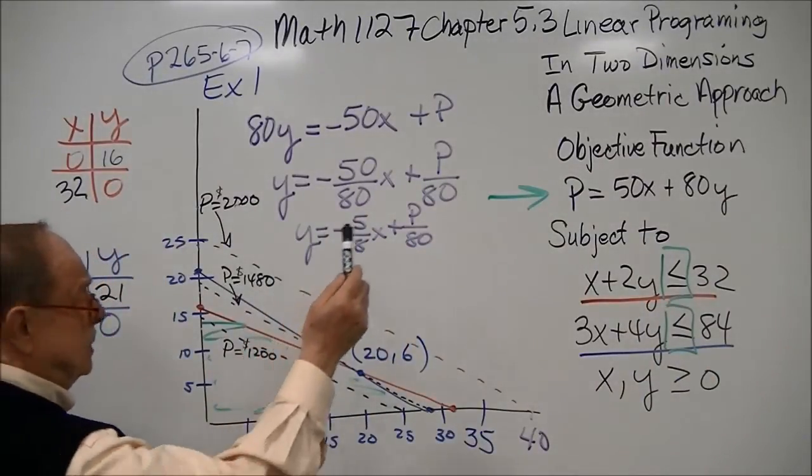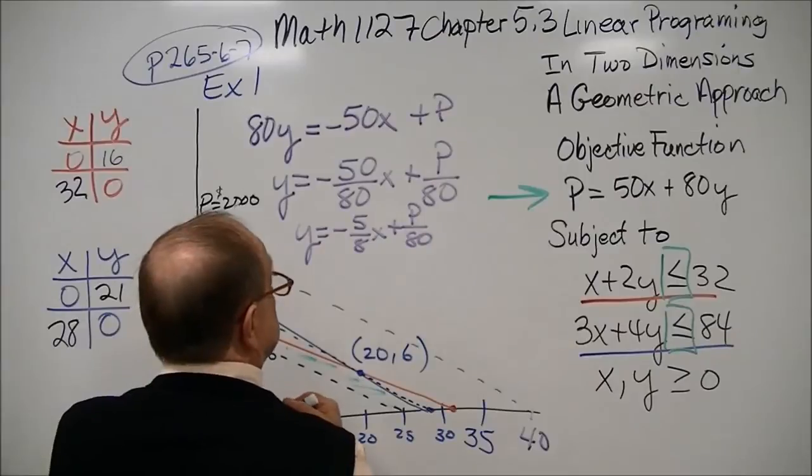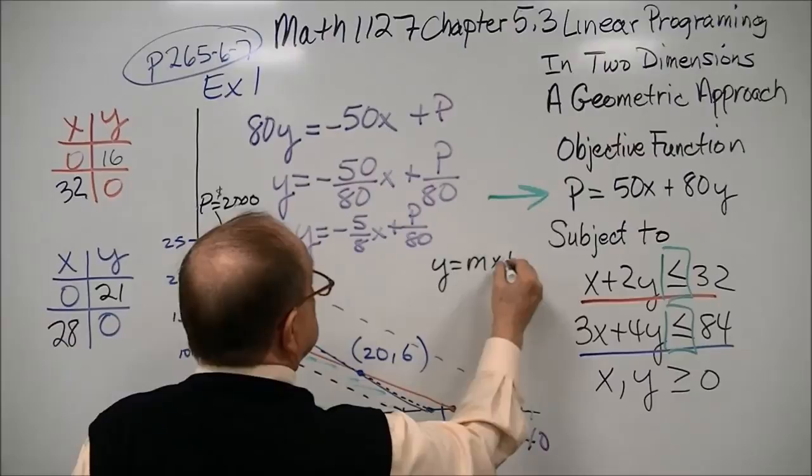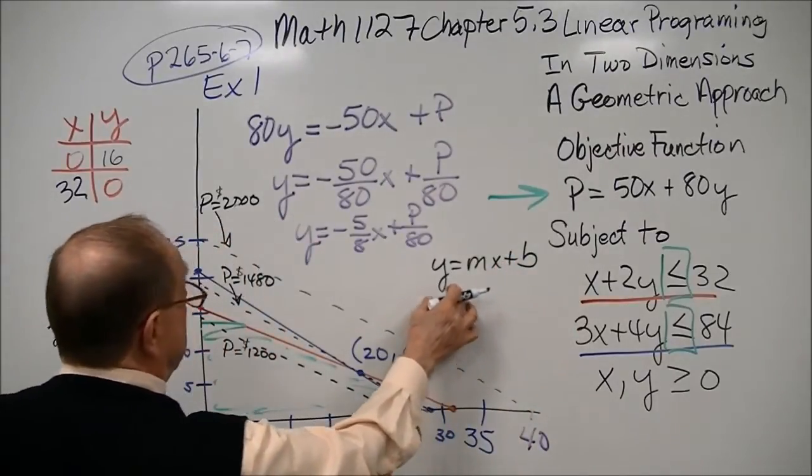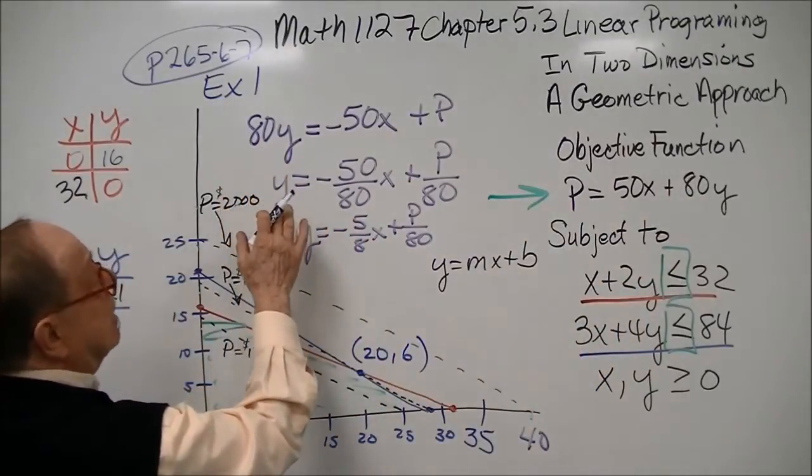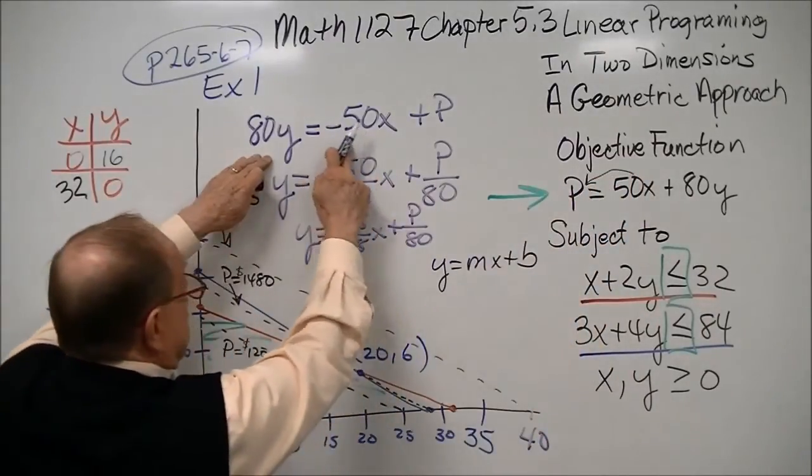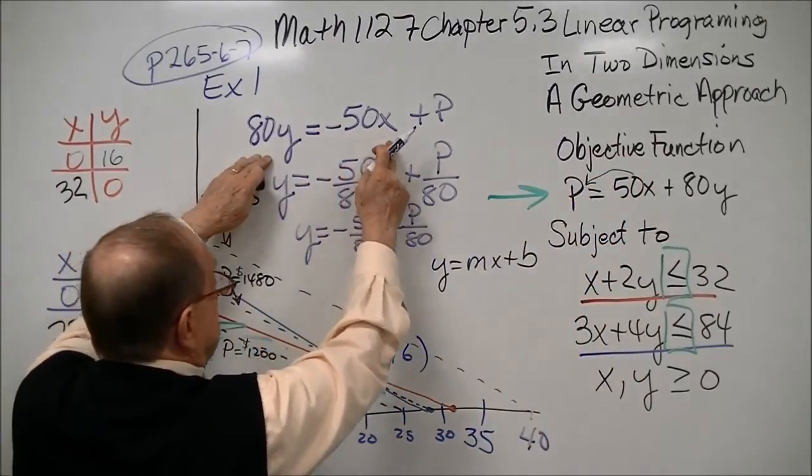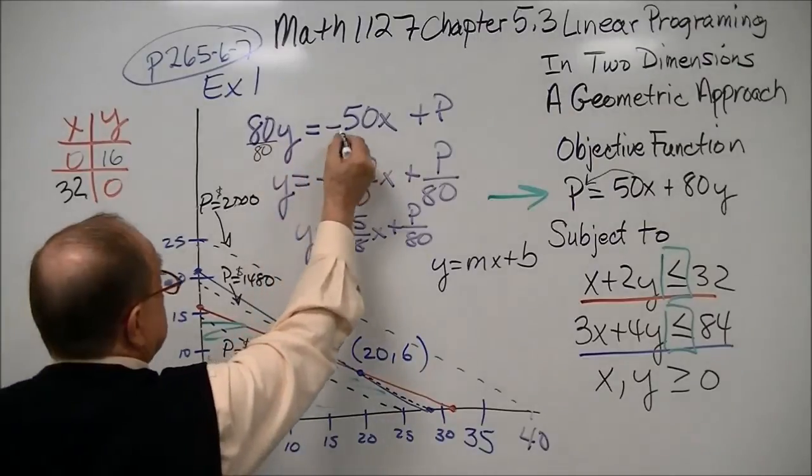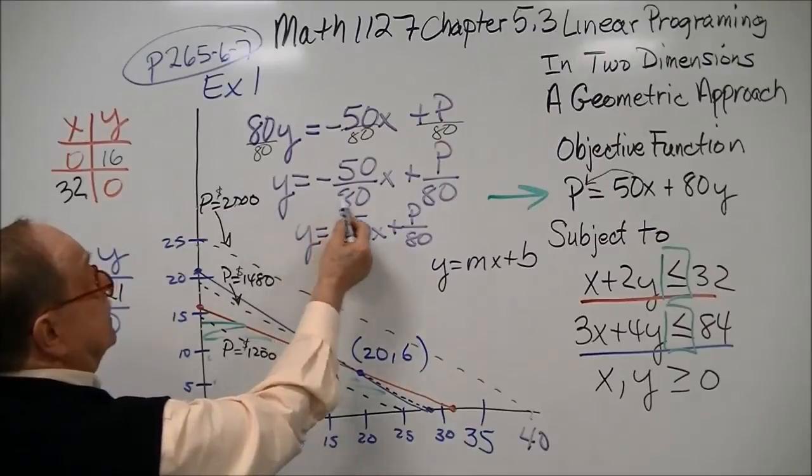We actually get, if we solve for the letter y to put this in slope intercept by solving for y. I'm going to take my positive 80y, leave it there, move this over to the other side. I get a negative 50x, and then the P is there. Then I divide everything by 80, and I get this next line.